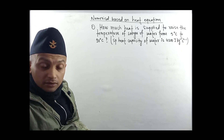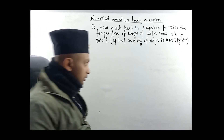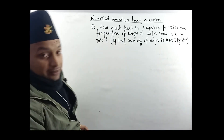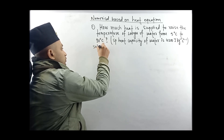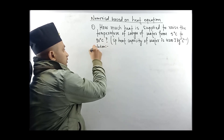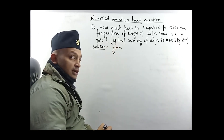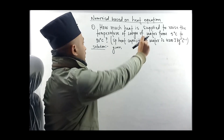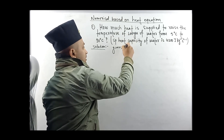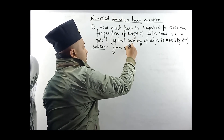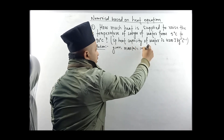How much heat is supplied to the temperature? The numerical data are shown. Here I am going to take a look at the solution. We have to take a look at the data. Gram means mass. M is equal to 100 gram.